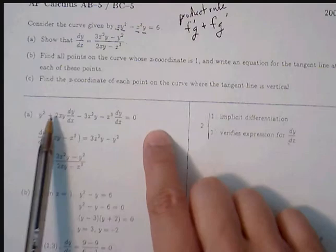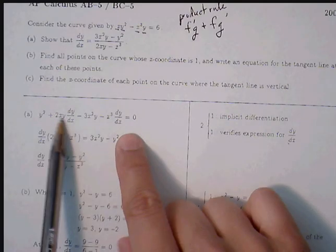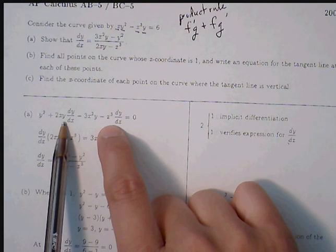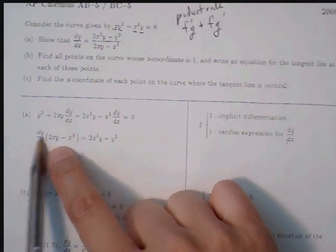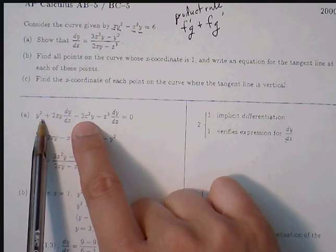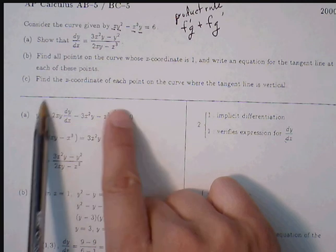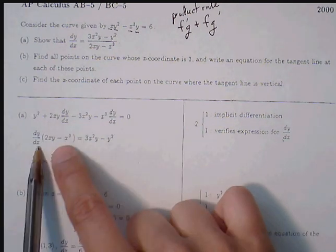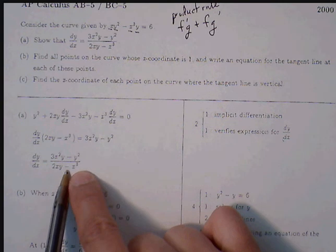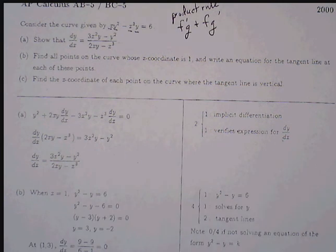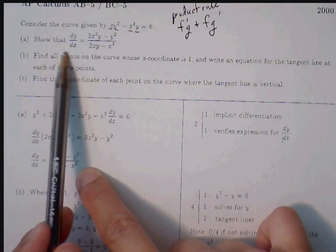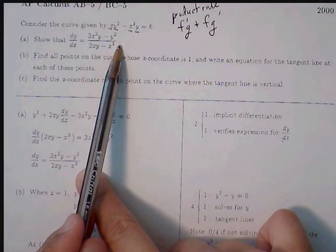Now it's just a matter of isolating dy/dx. Move the two dy/dx terms to the left side, and move y² and negative 3x² to the other side. Factor out the dy/dx, then divide both sides by the parenthetical expression. Now we have our derivative, which matches what part A asks us to show.